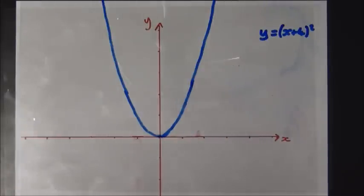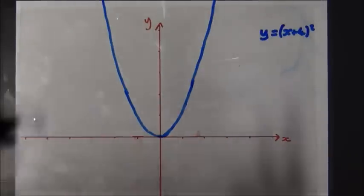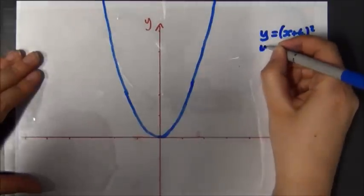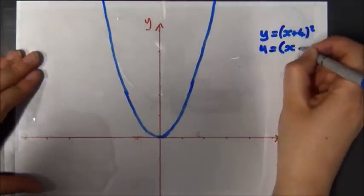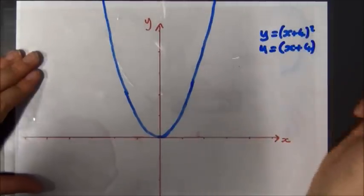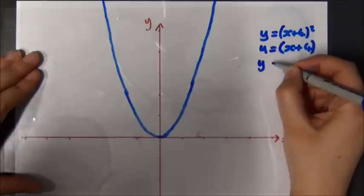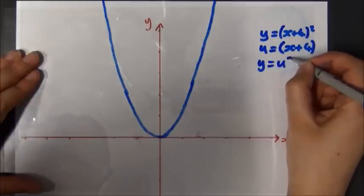Let's take a closer look then. To help me to think about this, I'm going to do a substitution and let u equal x plus 4. So the graph that I'm interested in is y equals u squared.